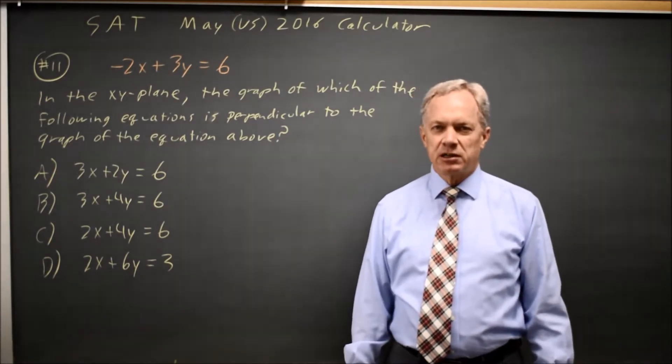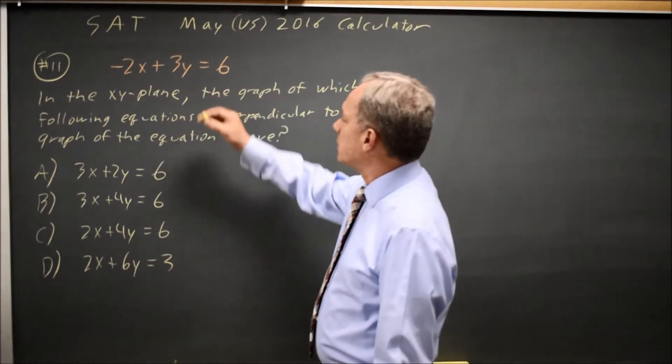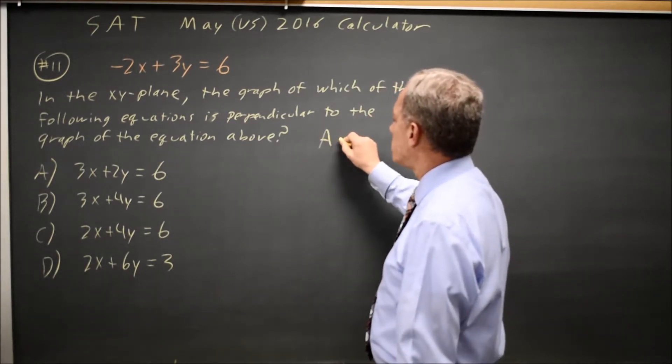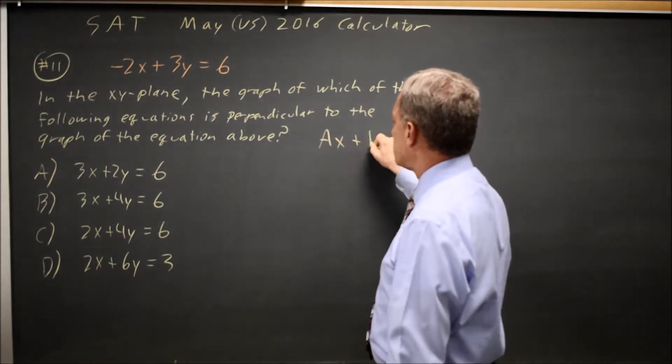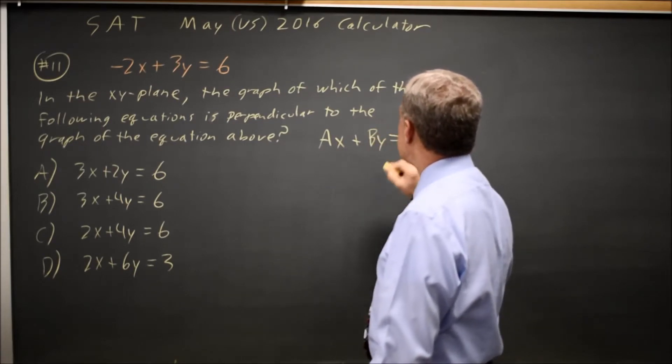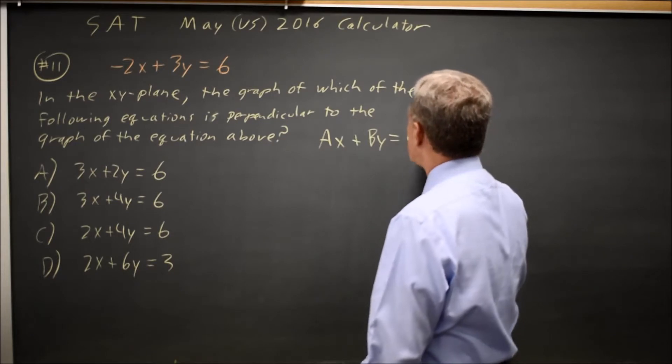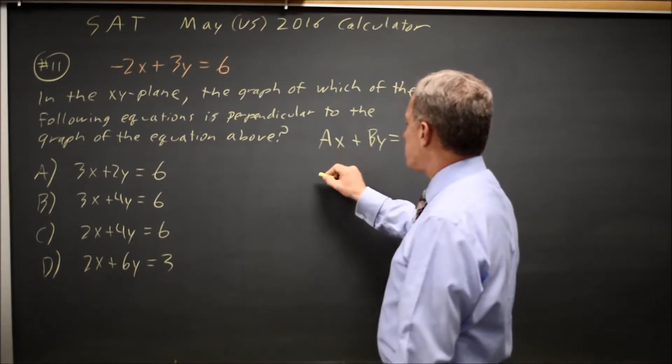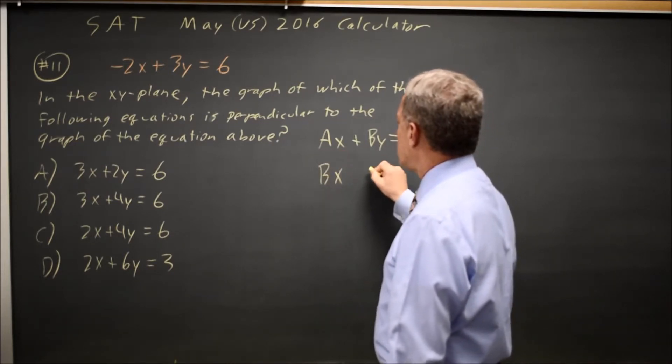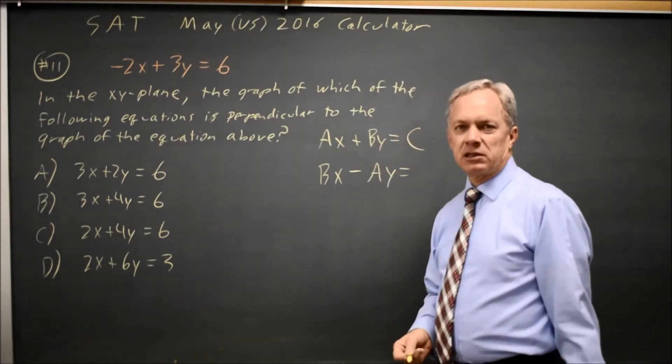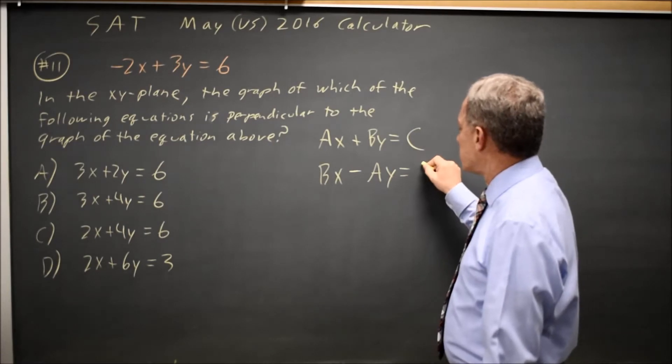College Board asked for the line perpendicular to the one given, and we have two ways of doing this. The shortcut is we may have heard that AX plus BY equals C. To find a perpendicular, you swap A and B and flip the sign on one of them, and then any constant will do.